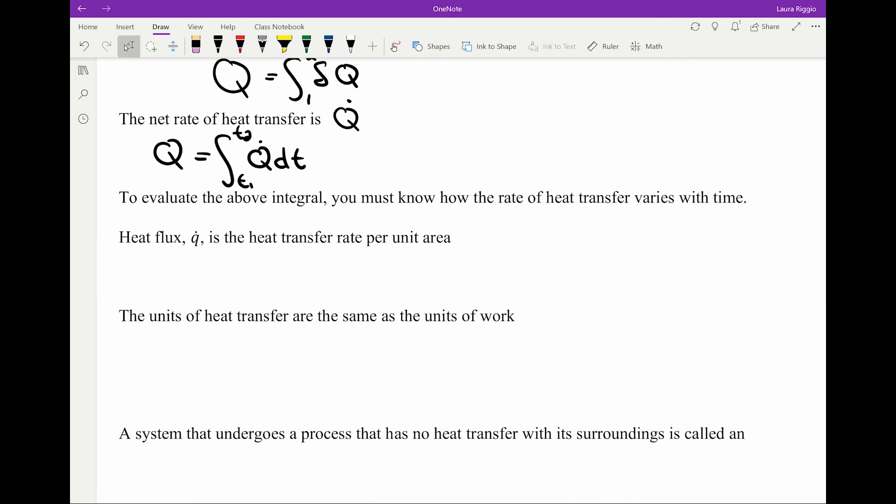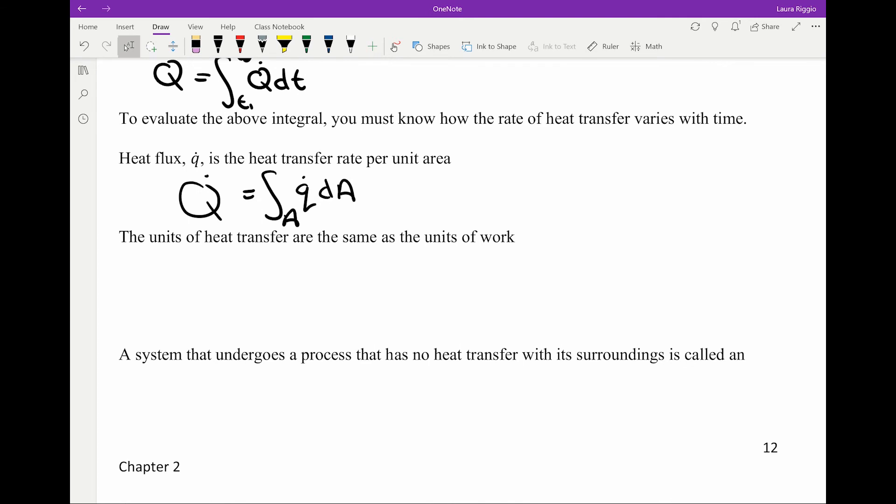To evaluate the above integral, we have to know how the heat transfer rate varies with time. Another heat transfer parameter that's used commonly is the heat flux, which is the heat transfer per unit area. My total heat transfer rate is the area integral of my heat flux. The units of heat transfer are the same as work: kilojoules or BTUs. The units of heat flux are kilowatts per meter squared or BTU per hour per foot squared.